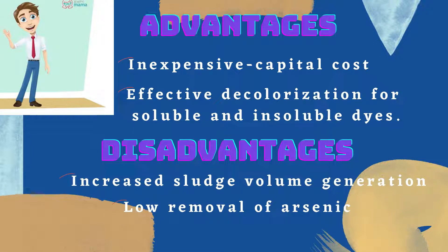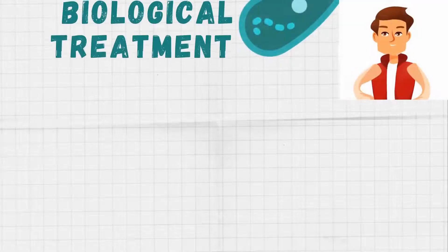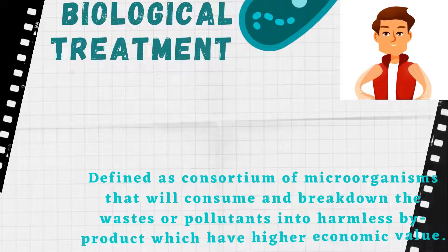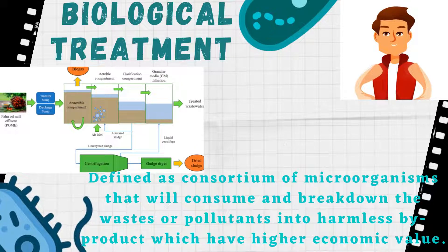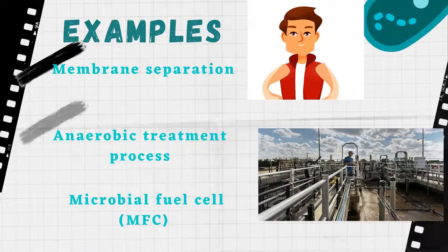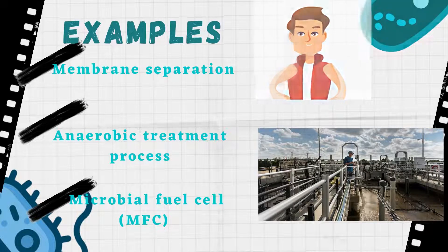The disadvantage of physicochemical treatment is increased sludge volume generation and low removal of arsenic. Biological treatment is defined as a consortium of microorganisms that will consume or break down waste or pollutants into harmless by-products which will have higher economic values. Examples of biological treatment include membrane separation, anaerobic filters, and microbial fuel cells (MFC).